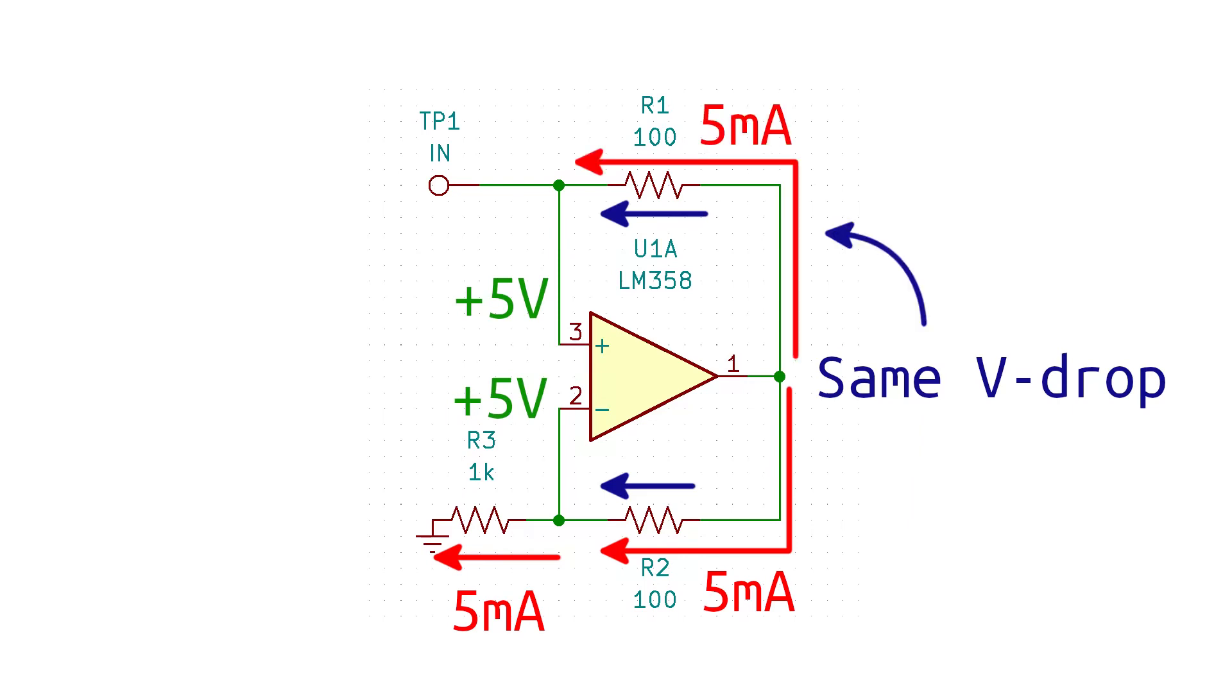And since the bottom resistor has 5 milliamps of current flowing through it, we can see that the top resistor also has a 5 milliamp current flowing through it. And there you have it. We've basically simulated a negative resistance by inverting the resistance on the bottom resistor.